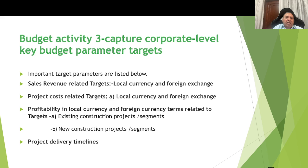Activity number three is very important: capture the corporate level key budget parameters. At the top level — MD or CEO level — what is typically decided includes: sales revenue targets in local and foreign currency; project cost-related targets in local and foreign currency; profitability targets in local and foreign currency terms vis-à-vis existing and new construction projects in the pipeline; and project delivery timelines. These are the top-level parameters in which top management is interested.